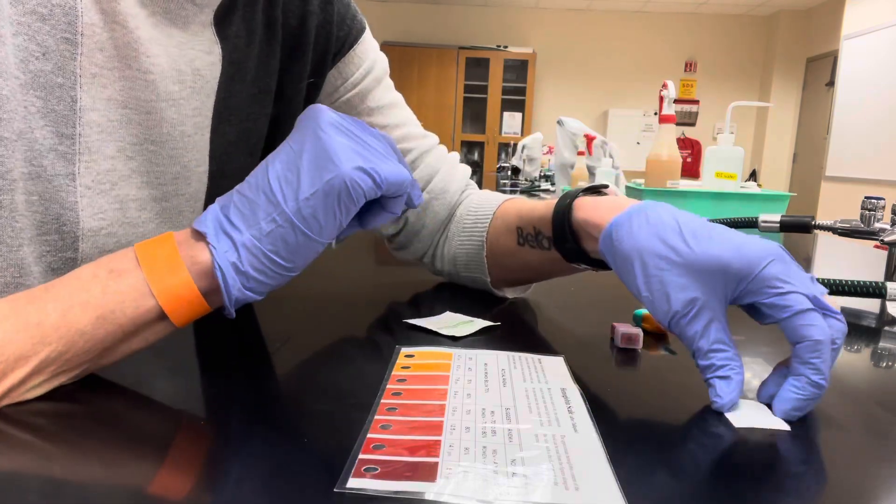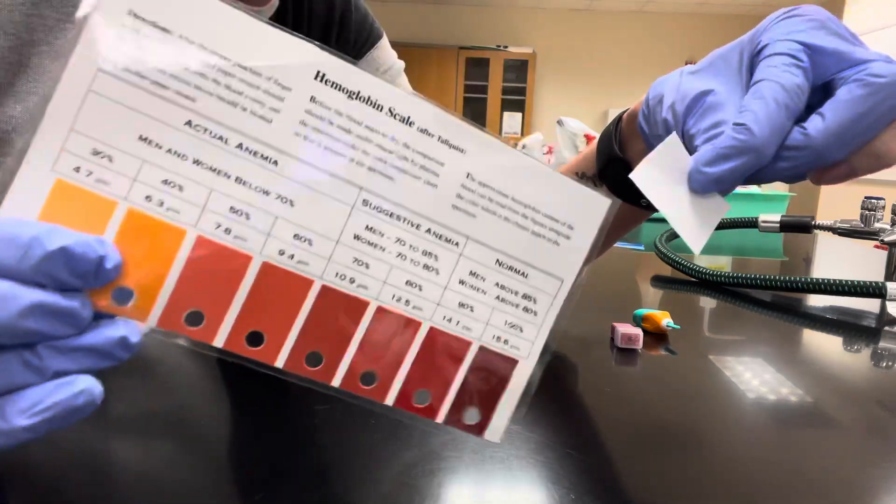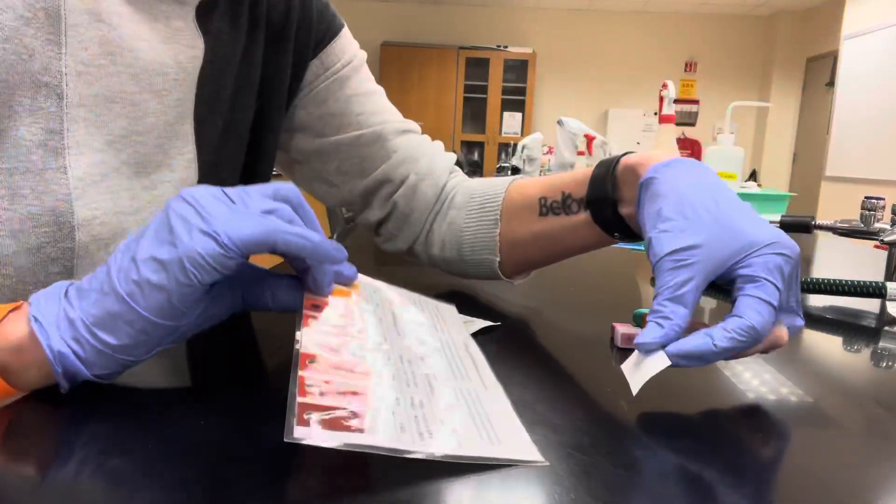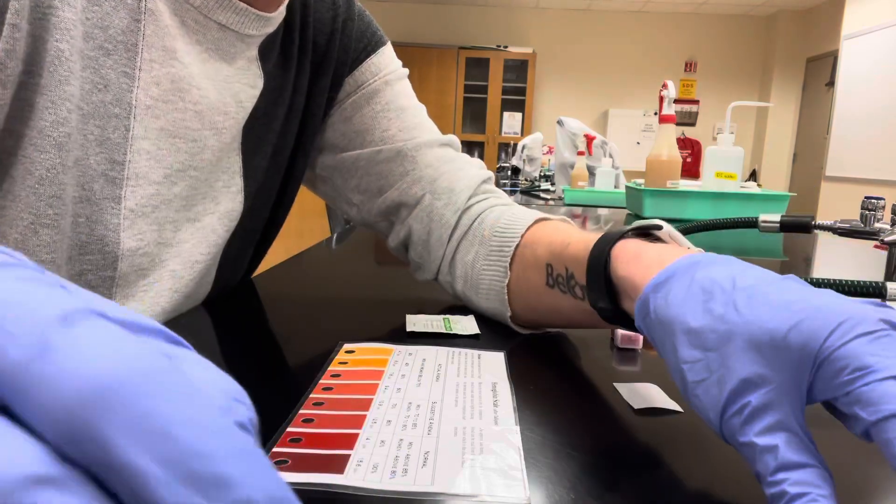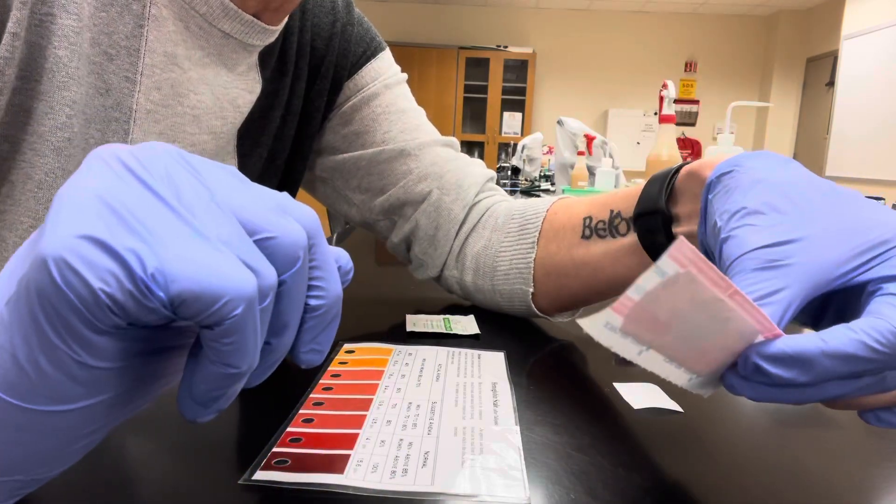You'll need a piece of Talqvist paper and the hemoglobin scale, and then go ahead and get out a cotton ball and a band-aid to tend to your wound.